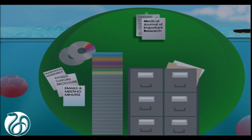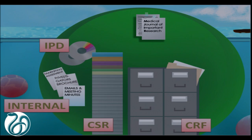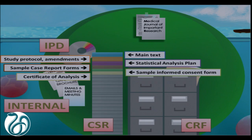Each trial, as everybody in this room now knows, contains a myriad of documents and types of data — things like case report forms, individual participant data (IPD), internal documents like marketing assessments, investigators' brochures, emails, meeting minutes. And the clinical study report, a CSR, which itself contains many elements like the protocol, the statistical analysis plan, sample case report forms, and so on.